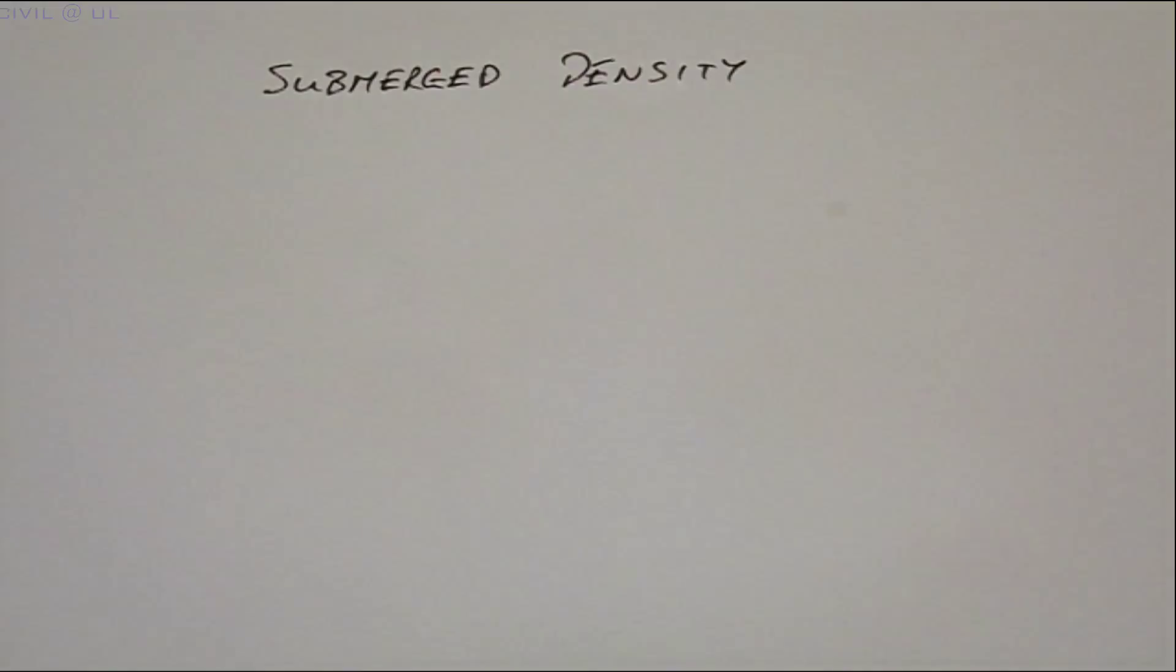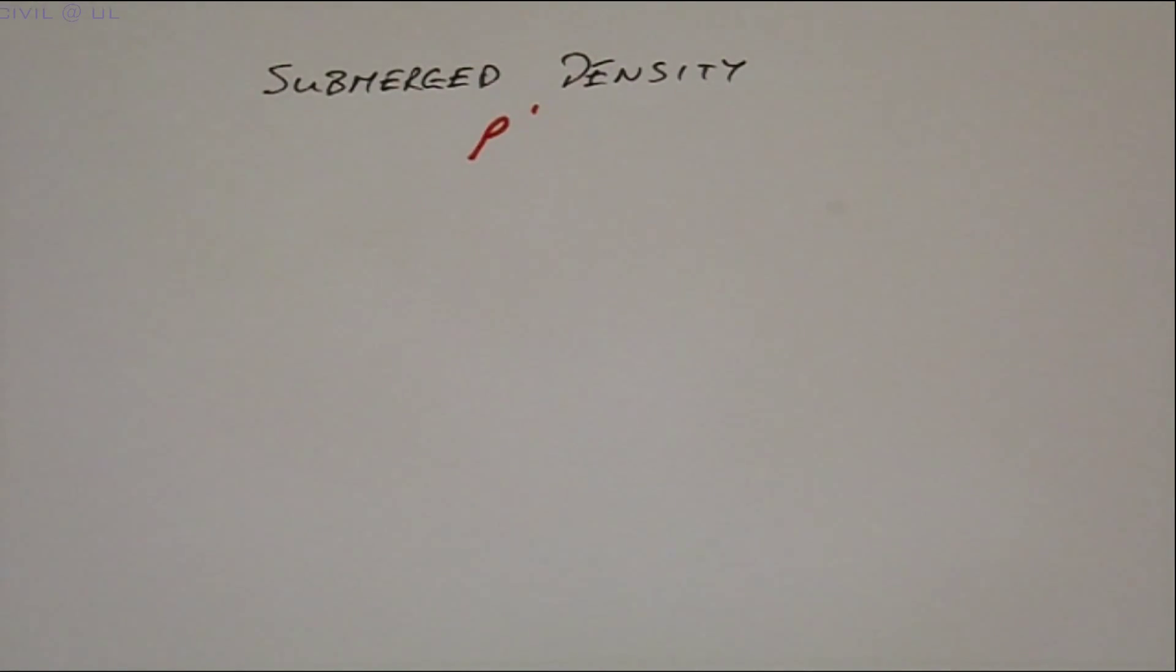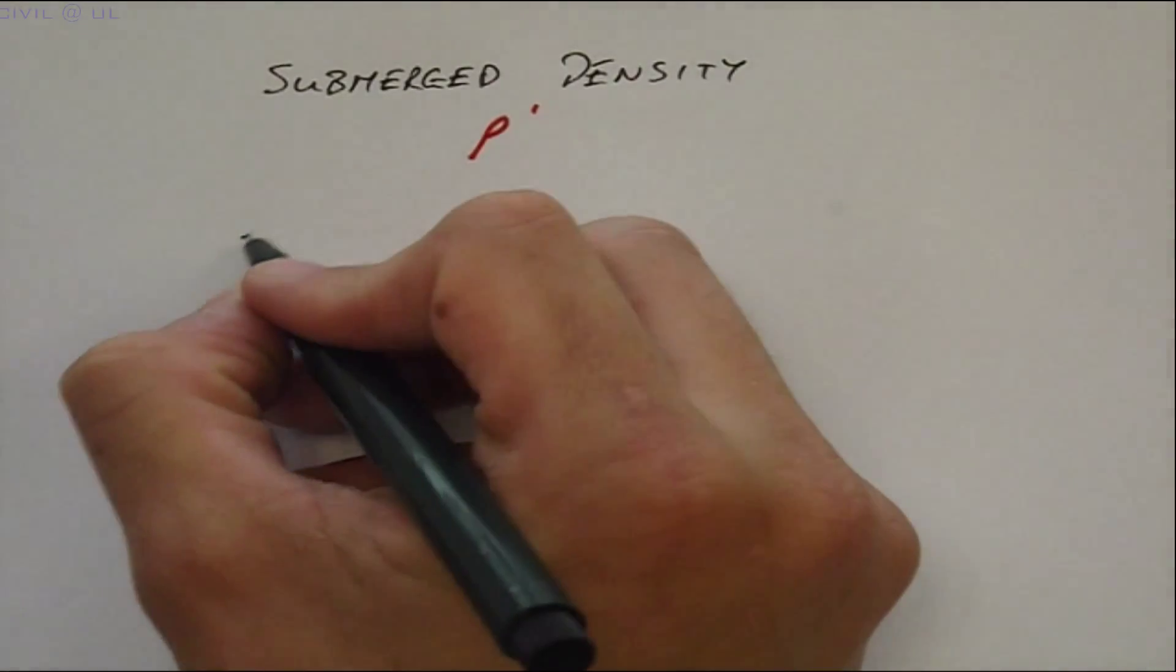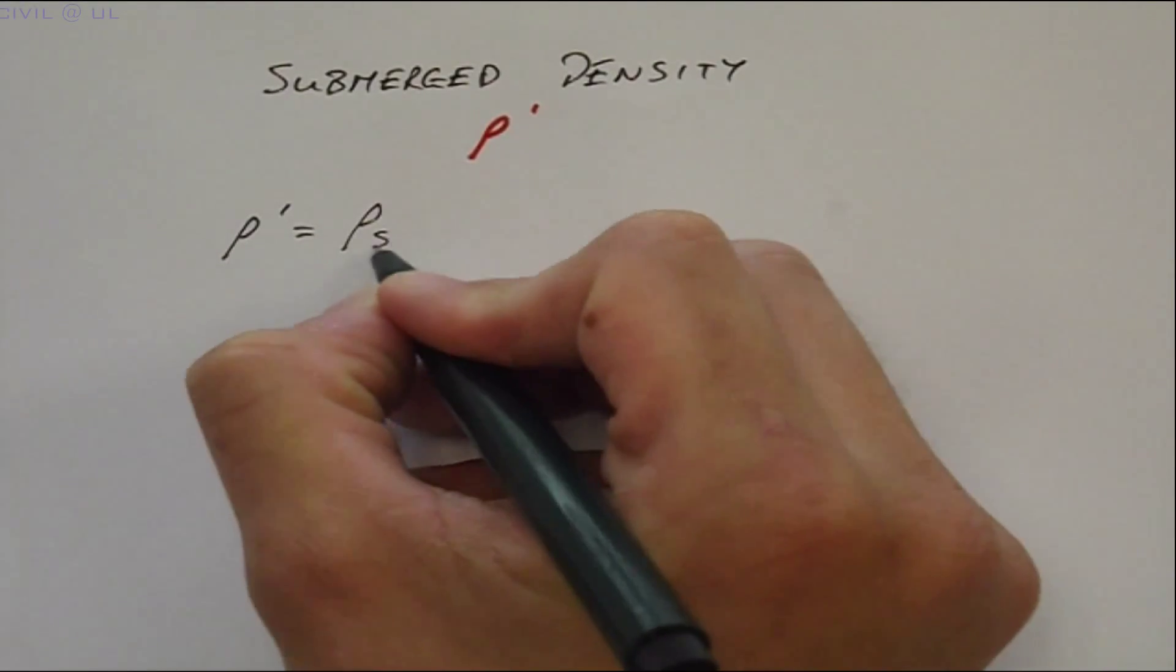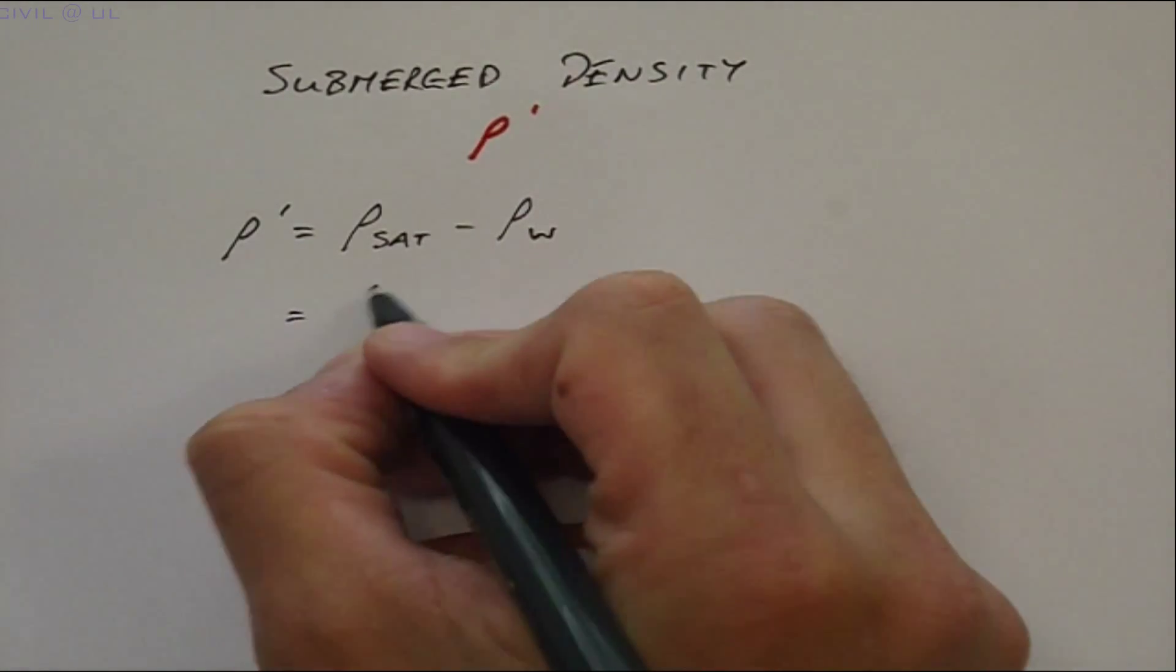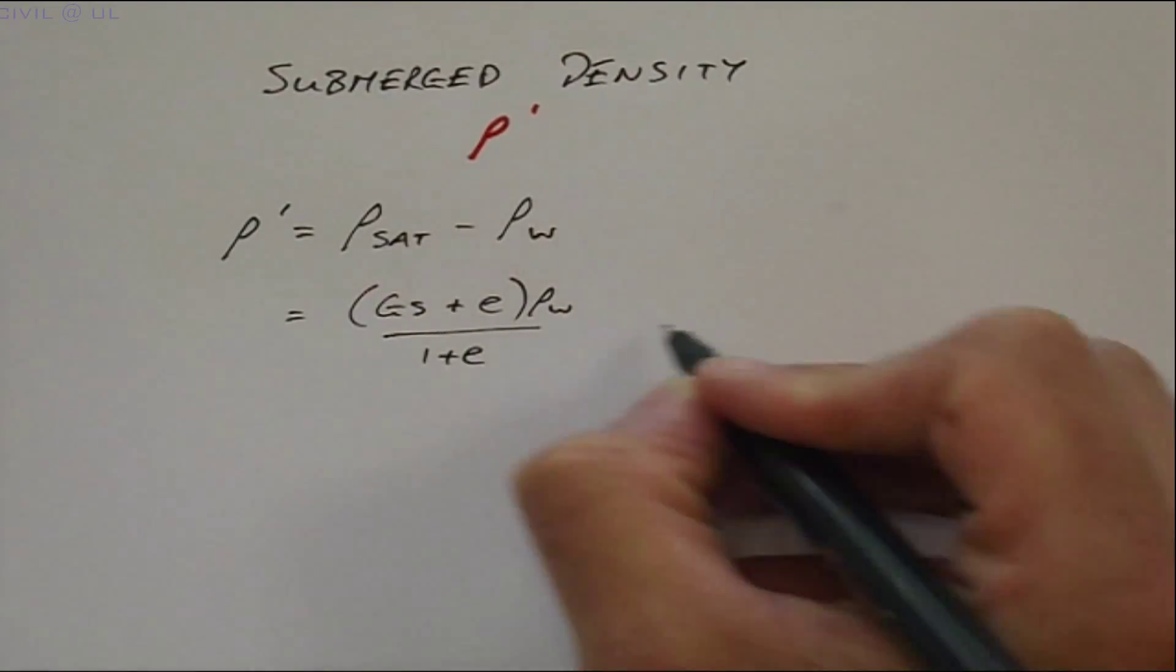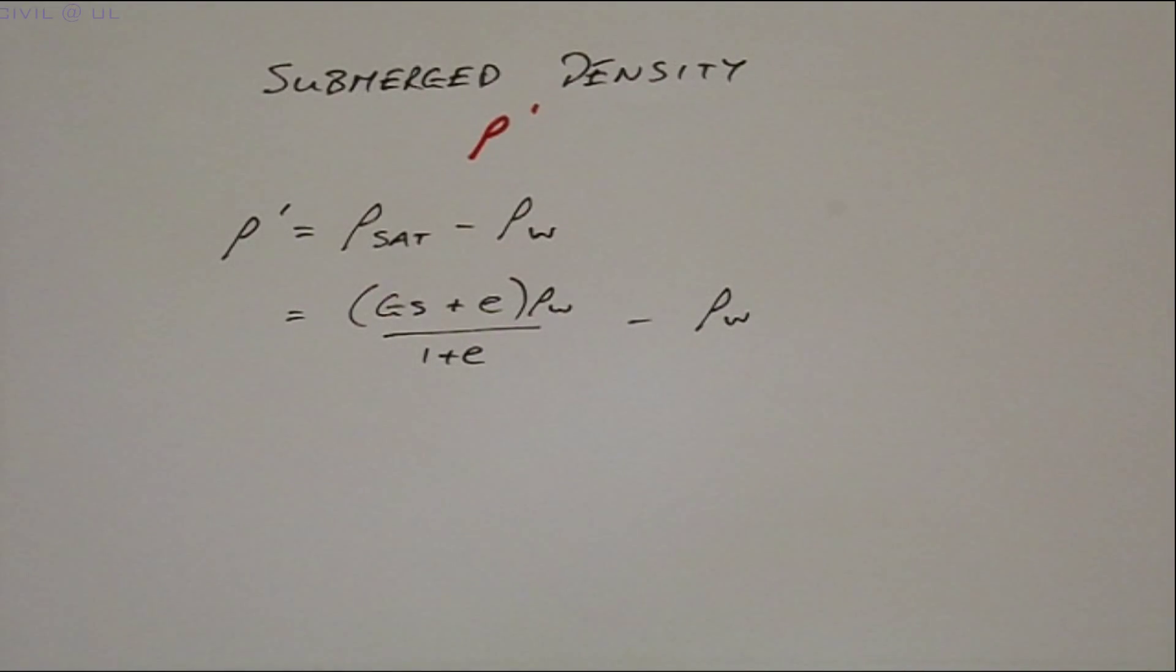The submerged density, usually indicated by ρ prime, requires a little bit of algebra, which I'm going to allow you to complete. Here's how we start. The submerged density is equal to the saturated density minus the density of water. Now, substituting for the saturated density, we have GS plus E times ρW, all over 1 plus E, minus the density of water.